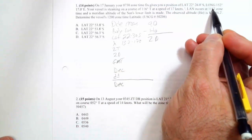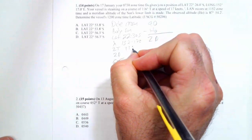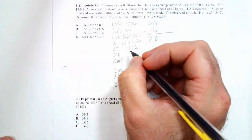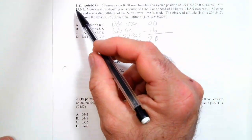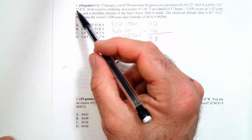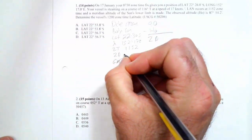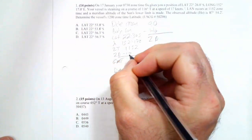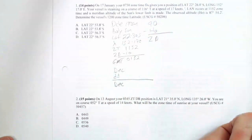So now, because I'm going to calculate my latitude at LAN, zone time is 1152. And my zone description, if I take 152.17, I divide it by 15, my zone description is going to end up being minus 10. So what's my GMT? It's 0152. It's still 17 January.